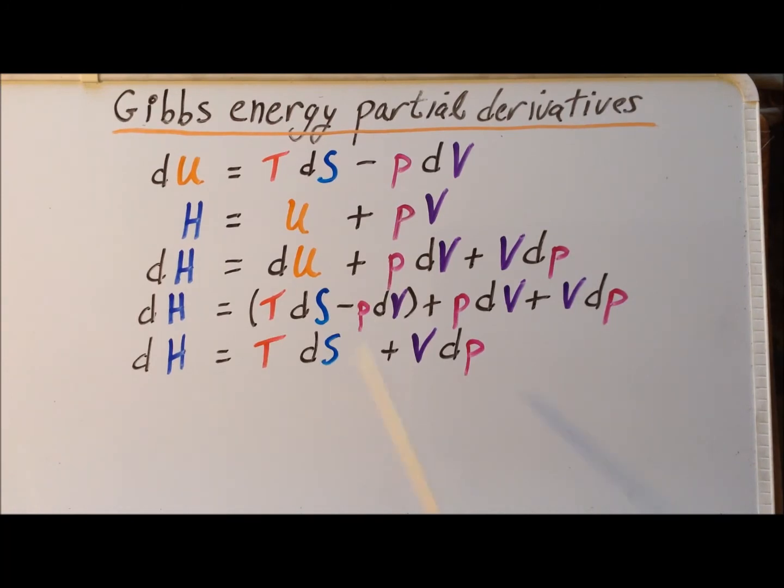Then we notice that the second and third terms here are additive inverses of each other. So these will drop out and we get that dH is equal to TdS plus VdP.